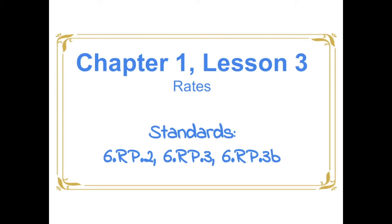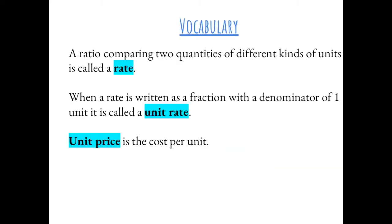Chapter 1, Lesson 3: Rates. A ratio comparing two quantities of different kinds of units is called a rate. When a rate is written as a fraction with a denominator of one unit, it is called a unit rate. Unit price is the cost per unit.